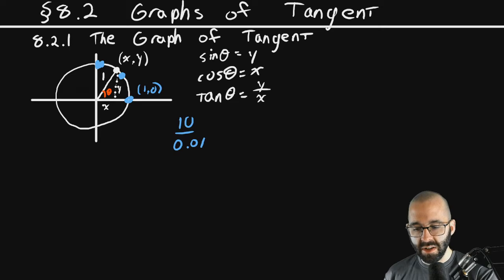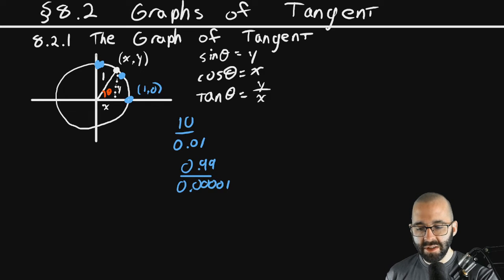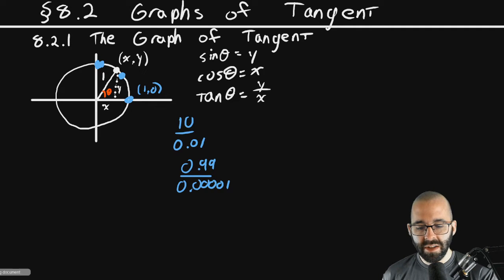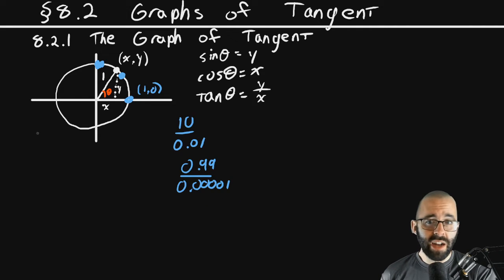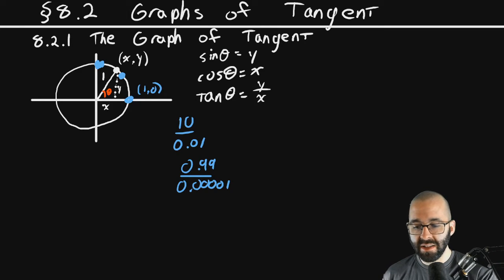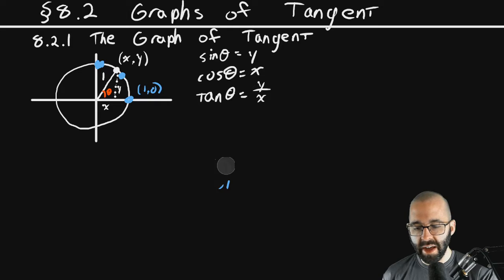What happens when you have a big number divided by a really small number, like 10 divided by 0.01? This gets really really big. As we get closer to pi over 2, x is getting closer and closer to 0, so we're dividing by a number near 0. Tangent goes to infinity — it's undefined there — so we have an asymptote, kind of like 1 over x.